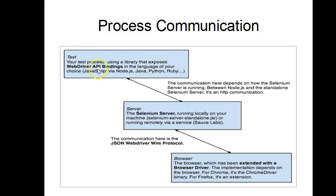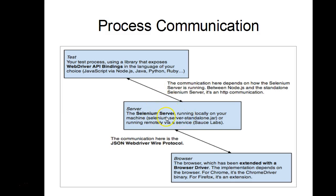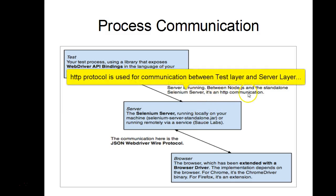The test layer is where your test cases and dot-js files reside. The communication between Node.js and the standalone Selenium server happens via HTTP. When we write Protractor test cases, Node.js provides the environment to run JavaScript. Our test cases are in JavaScript, with Node.js behind them, and the Selenium server runs using a standalone jar. They communicate with each other using HTTP protocol — Hypertext Transfer Protocol.